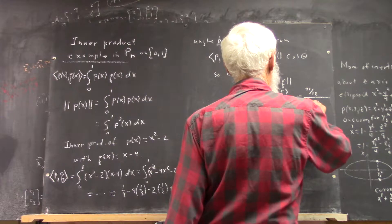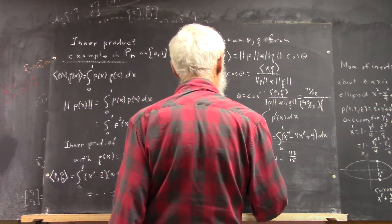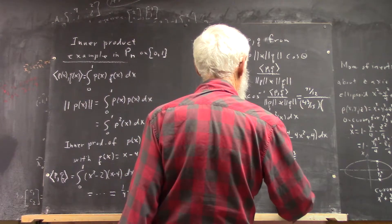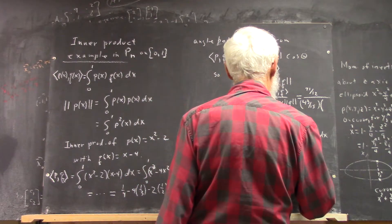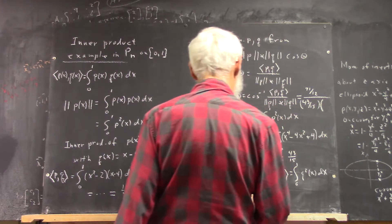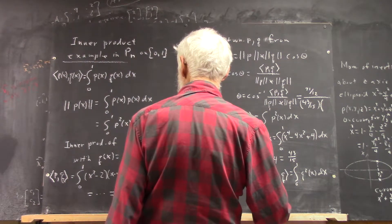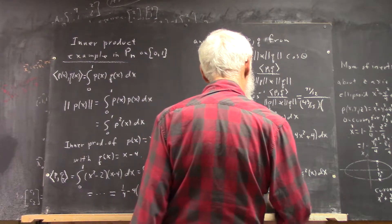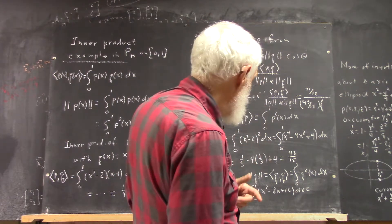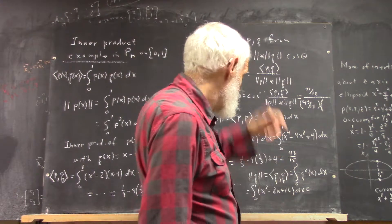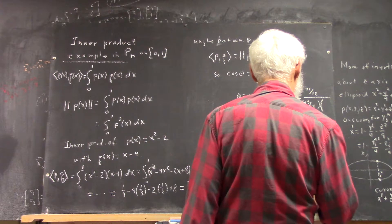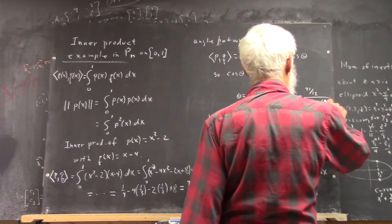43 fifteenths. The magnitude of q is the inner product of q with itself. So the integral from 0 to 1 of q squared dx, which is the integral from 0 to 1 of x squared minus 8x plus 16 dx, which equals 1 third minus 4 plus 16, which makes it 12 and 1 third, which is 37 over 3. Mixed numbers aren't really good to do calculations with.